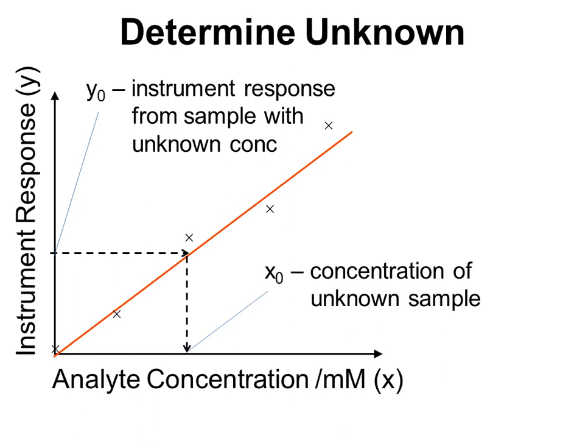Of course we could draw the graph and draw these lines on, but it's better to actually use the equations that we have. We know that y equals mx plus c from the line of best fit. So we should also know then that our y0 will equal m times x0 plus c. And if we rearrange that equation, we've got x0 equals y0 minus c all divided by m. And that allows us to use the actual numbers and an equation to work out the concentration of our unknown sample.